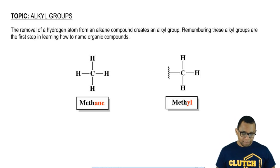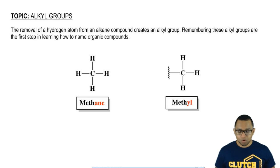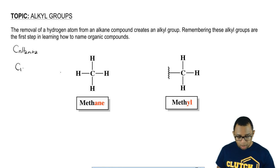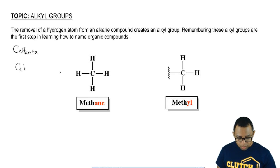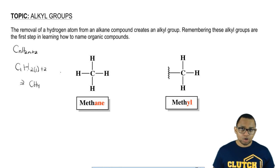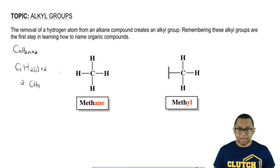If we take a look at this first compound, CH4 — CH4 is an alkane. Remember, alkanes have a formula of CnH2n+2, where n is the number of carbons. It has one carbon, so n is 1, then that would be H(2×1)+2. That's how we got the formula CH4. This is our saturated hydrocarbon — saturated meaning the carbon has the maximum amount of hydrogens possible.